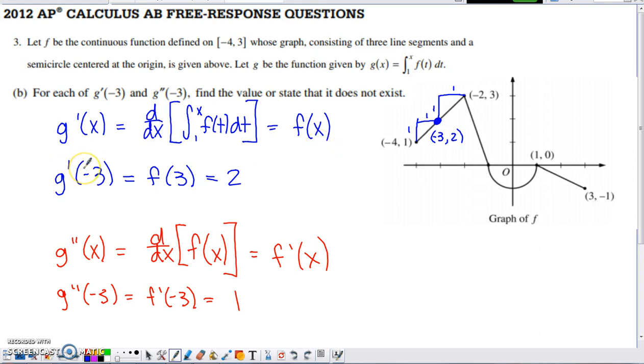g prime of negative 3 is equal to f of negative 3. I'm putting negative 3 in place of this X, so I put negative 3 in place of this X. f of negative 3 I can find on this graph. I do have to do some rise over run arguments here to be certain what my y value on f is at the x of negative 3. And if you're careful with that, you're going to determine that that y value is positive 2.